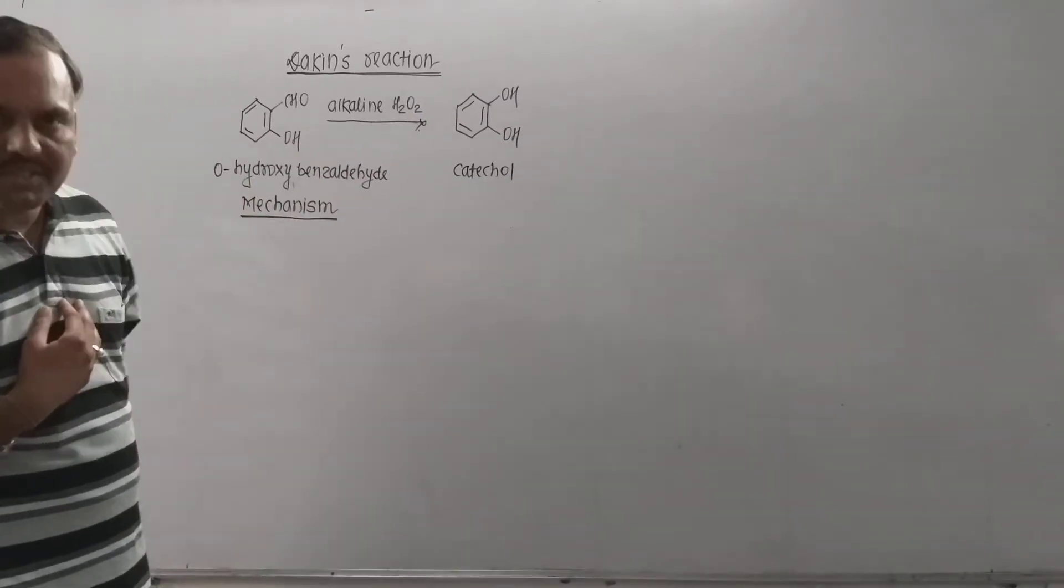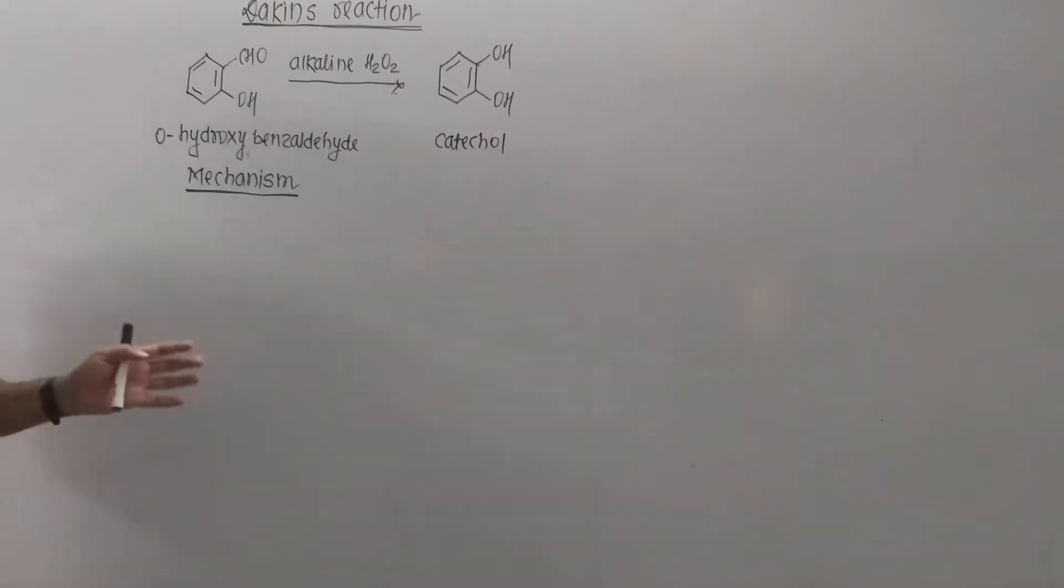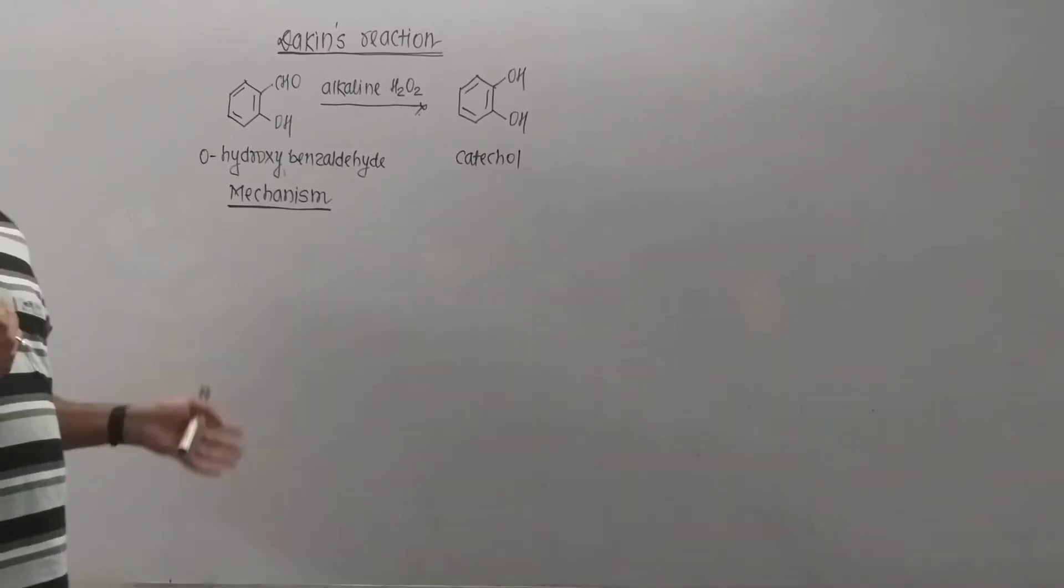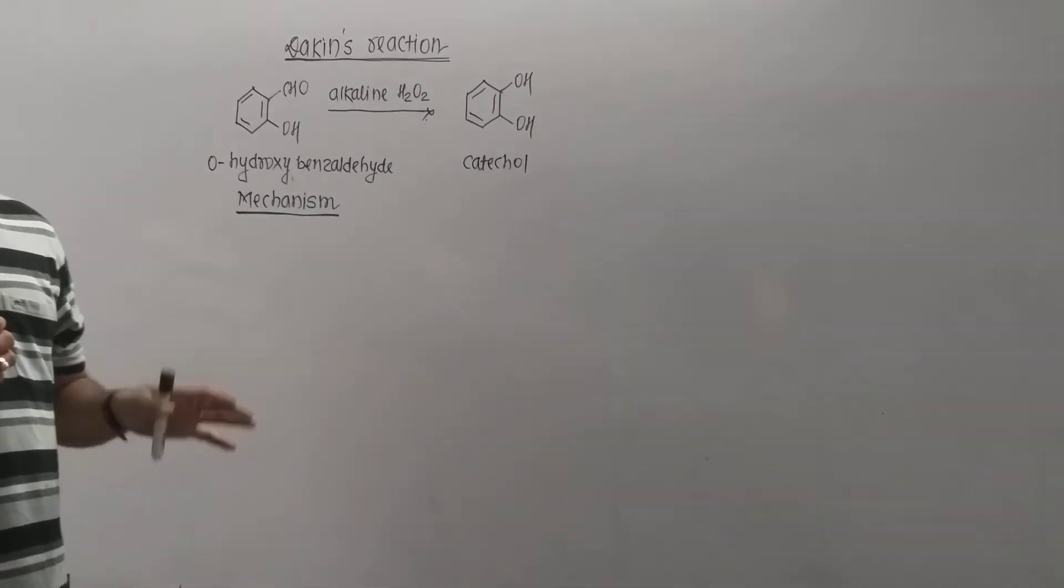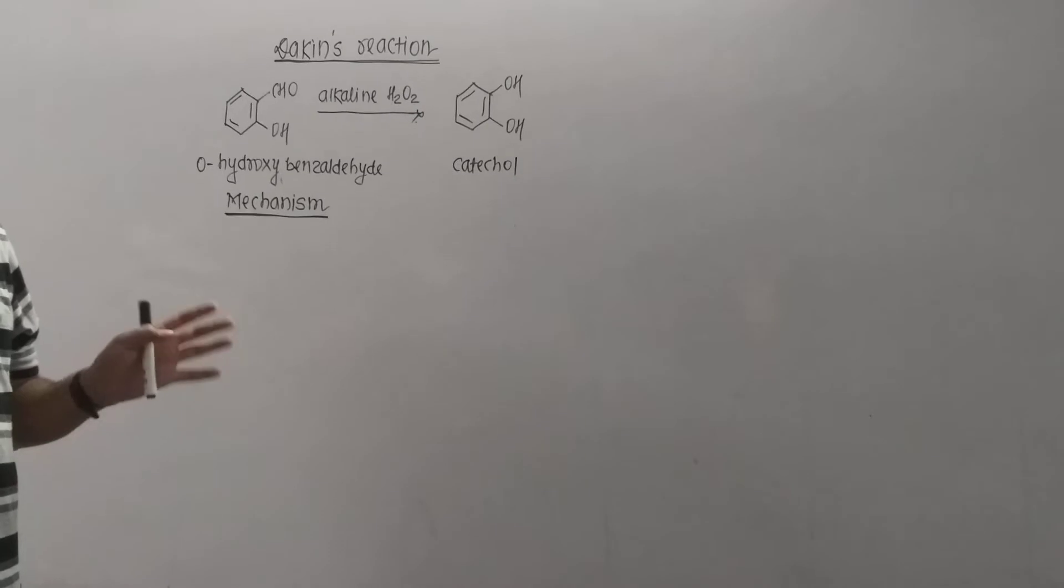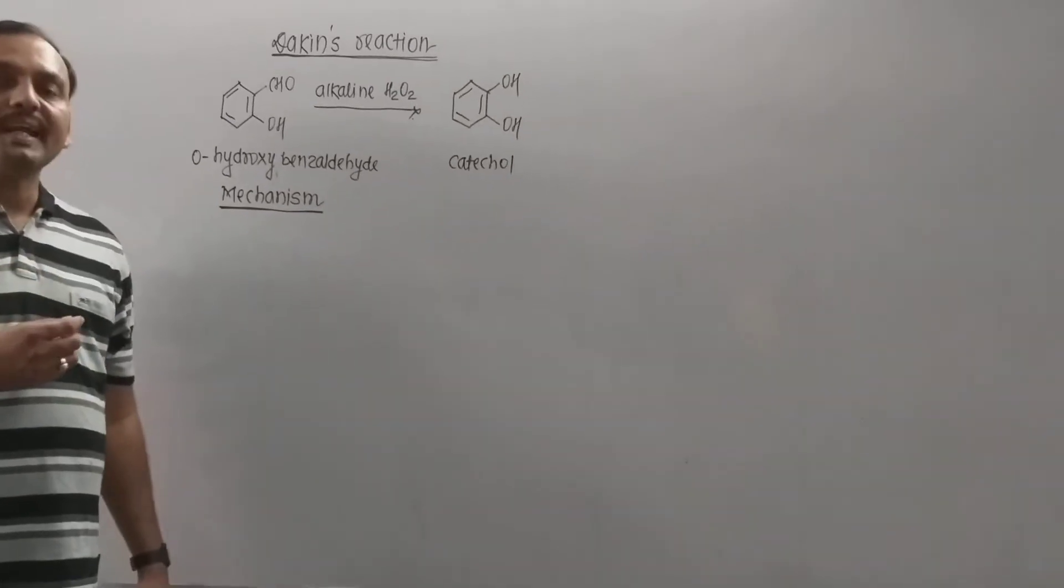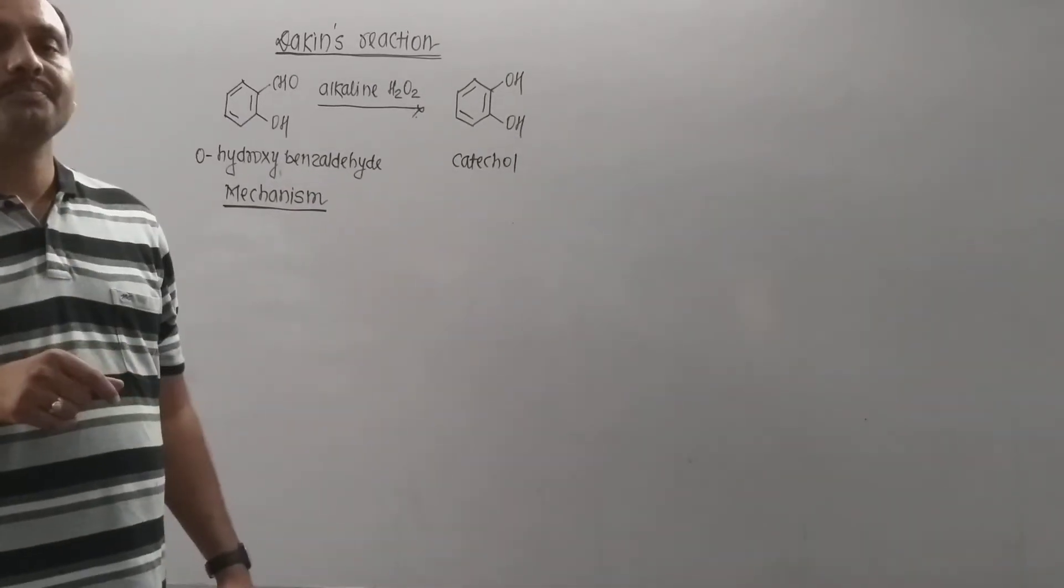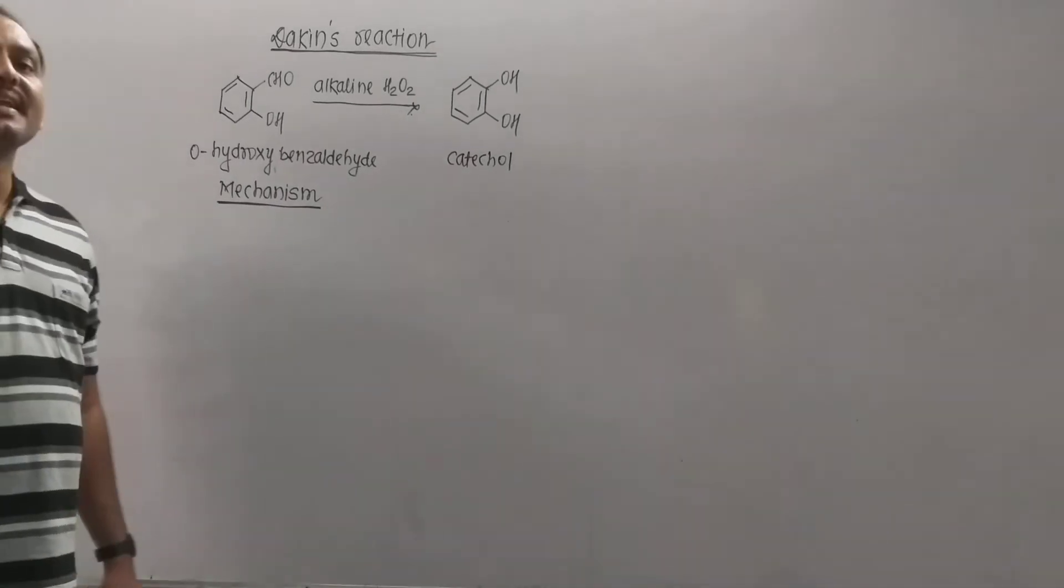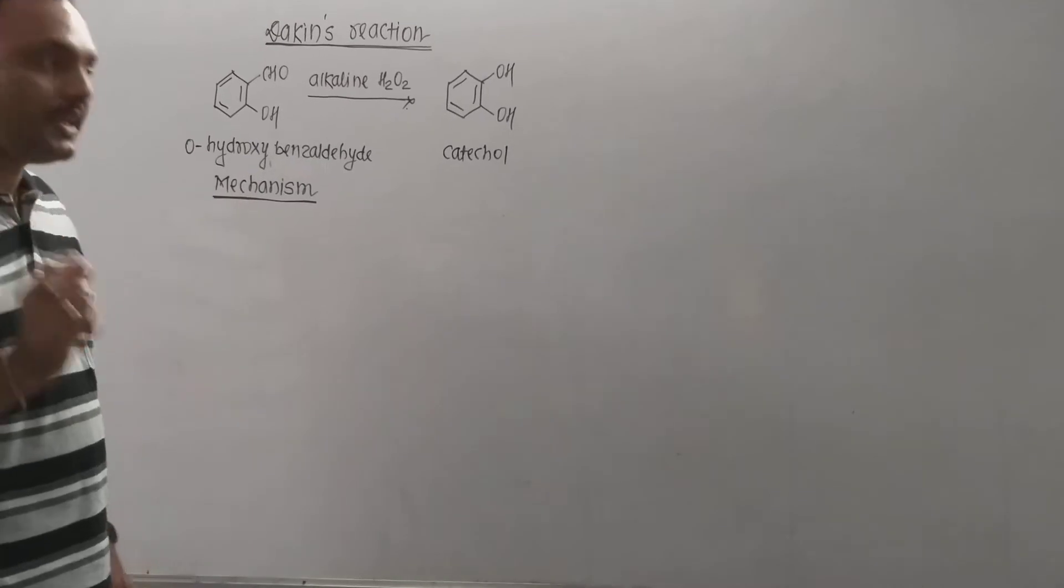Today we are going to discuss Dakin's reaction. Dakin's reaction is the reaction of ortho or para-hydroxybenzaldehyde with alkaline hydrogen peroxide to obtain dihydric phenols. In this reaction, the aldehyde group ultimately gets replaced by a hydroxy group.